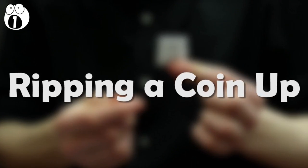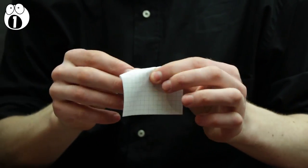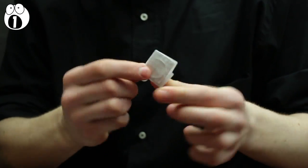Number 1, ripping a coin up. Watch as this coin is folded inside this piece of paper. And finally, watch as the paper and coin, which you can see inside, is ripped apart.